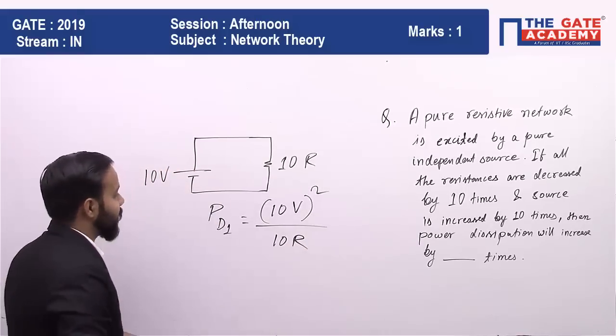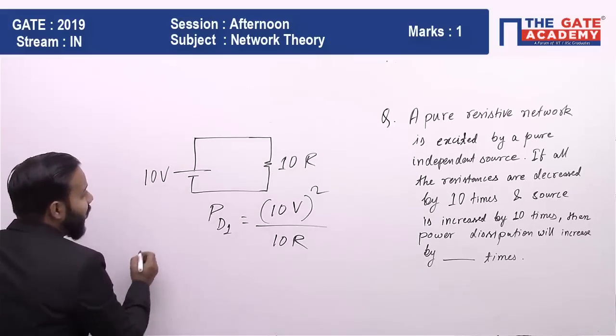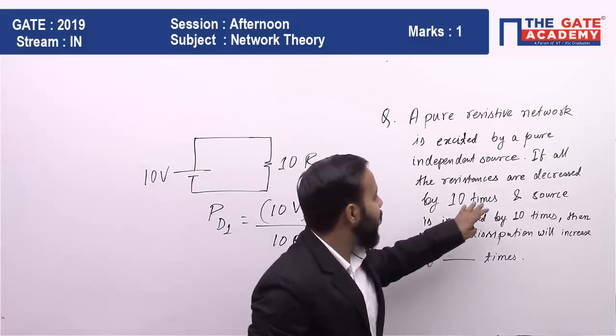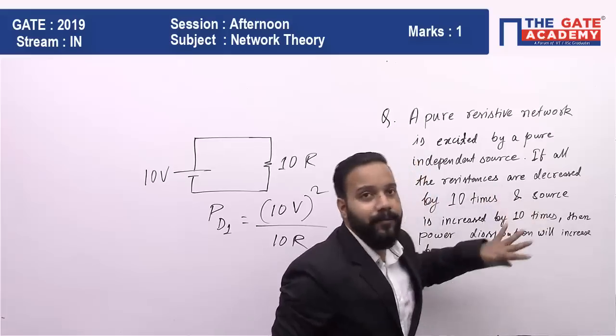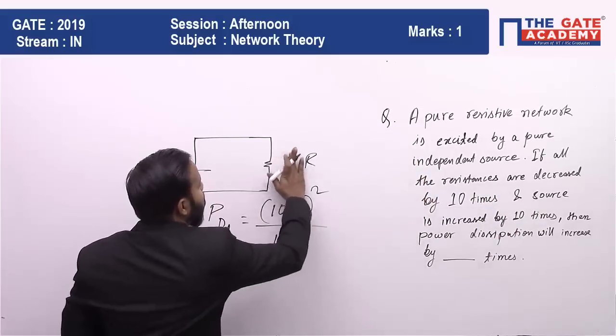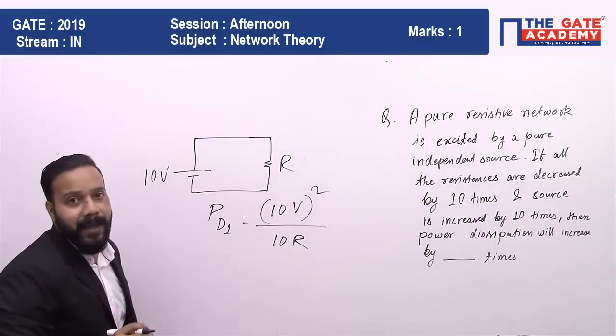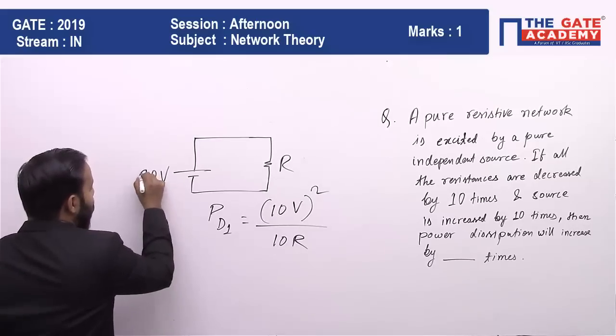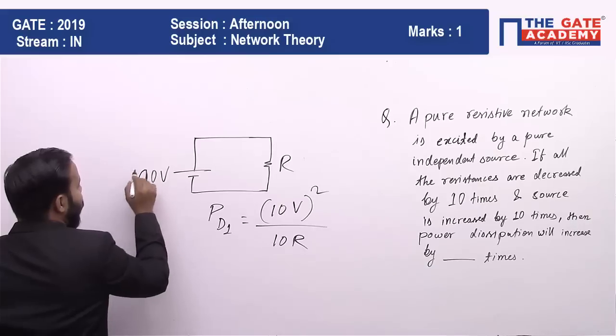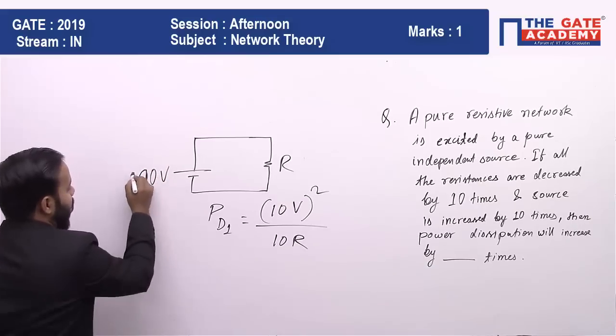In the second case, this resistor will be decreased by 10 times, so it becomes R, and the source is increased by 10 times, so it becomes 100V.